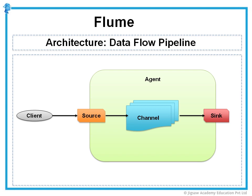Channels allow the decoupling of sources from sinks using the familiar producer-consumer model of data exchange. When spikes in client-side activity cause data to be generated faster than what the provisioned capacity on the destination can handle, the channel size increases. This allows sources and sinks to have different performance and runtime characteristics and yet be able to effectively use the physical resources available to the system. Flume agents can be chained together by the sink of one agent to the source of another agent, enabling the creation of complex data flow topologies.